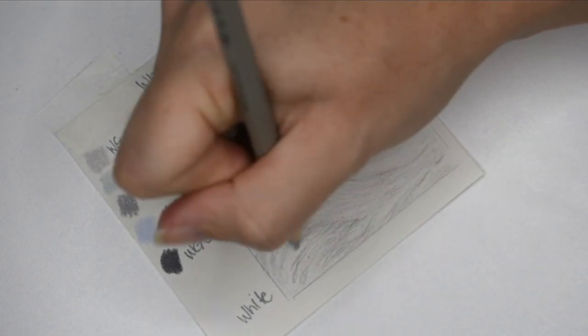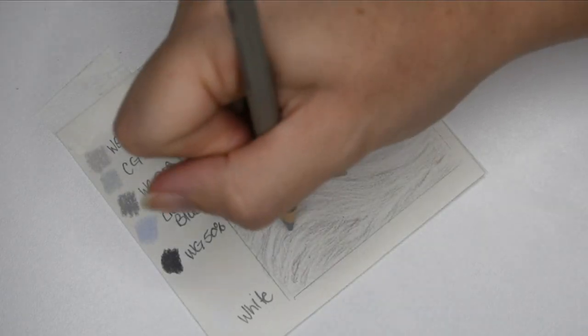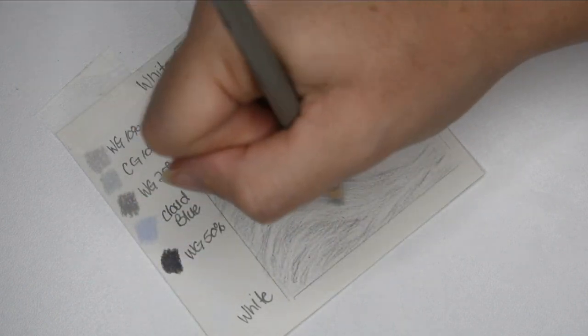Once the base is done, I'm going in with warm gray 20% to start blocking in my darker areas using a shading technique and also adding in fur details.